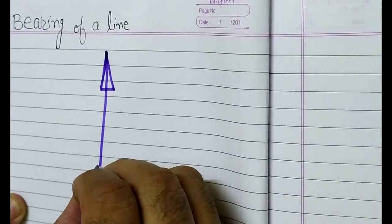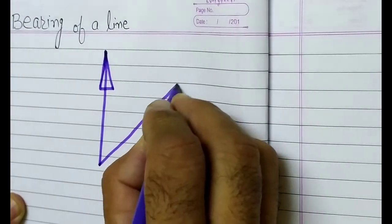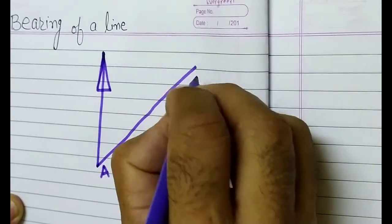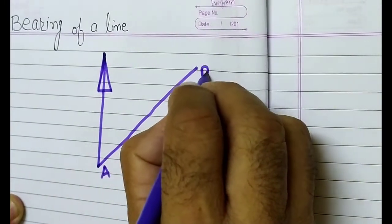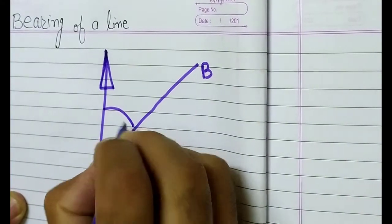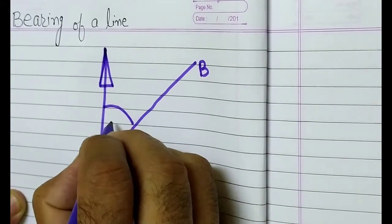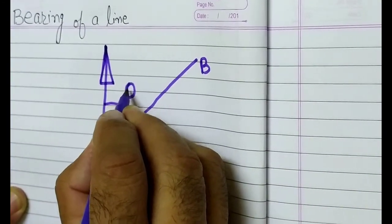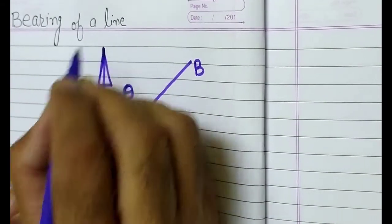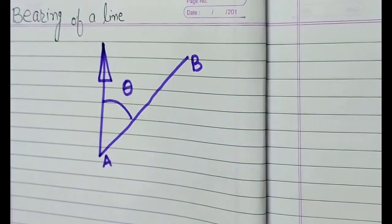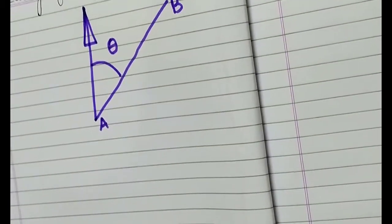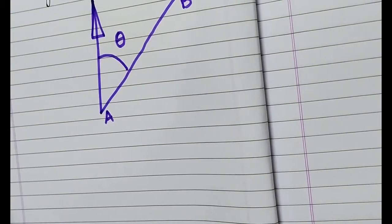Here, this is line AB. This is the meridian, and this is the angle theta which line AB makes with some reference line. We have two types of meridian which are used in our practice.